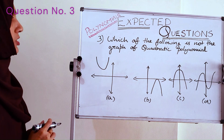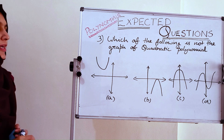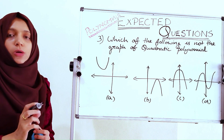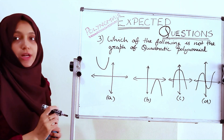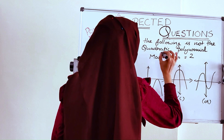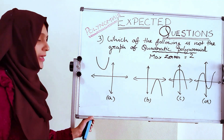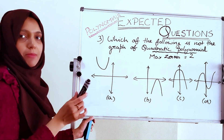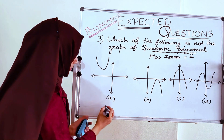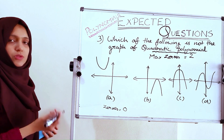Third question: which of the following is not the graph of a quadratic polynomial? This is an MCQ type question. From the given graphs, we have to find out which is not a graph of a quadratic polynomial. For a quadratic polynomial, the maximum number of zeros is 2. In the first graph, the curve is not touching or crossing the x-axis, so zeros = 0. Since 0 < 2, this can be a graph of a quadratic polynomial. In the second graph, the line is touching 1 time, so zeros = 1. Since 1 < 2, this can also be a graph of a quadratic polynomial.